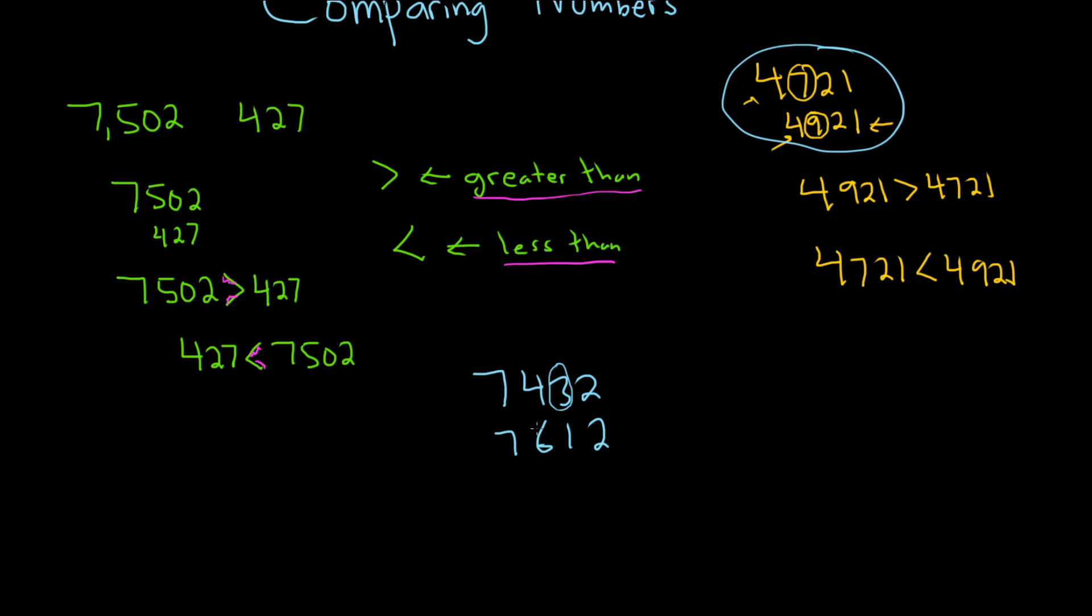So notice the sevens are the same. But look, here again, the bottom number dominates. It's got a bigger hundreds place. So this number on the bottom, because the hundreds place is bigger, is going to be bigger than this number.